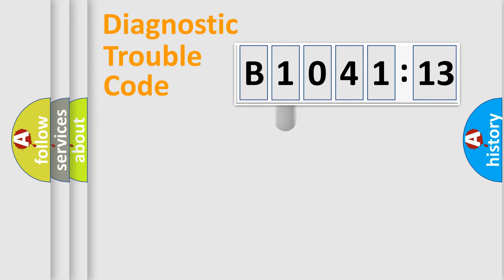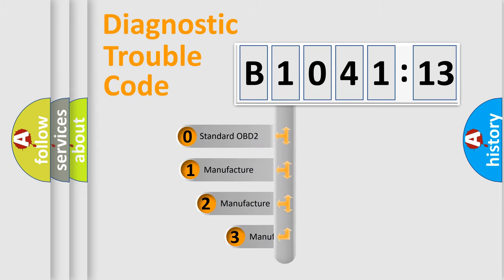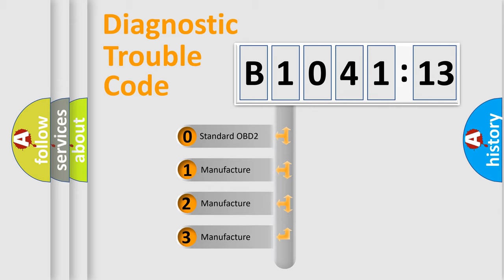Powertrain, Body, Chassis, Network. This distribution is defined in the first character code.